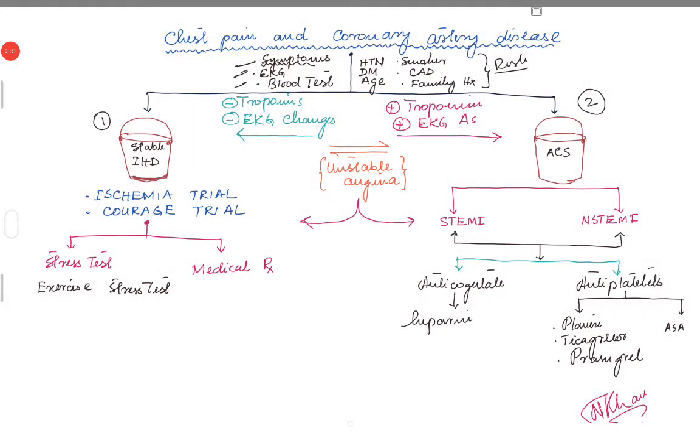Bucket one is stable ischemic heart disease. When we're talking about stable ischemic heart disease, basically we have ruled them out for ACS by checking troponins and EKGs. You're not seeing very dynamic EKG changes, T wave inversions, or ST depressions.